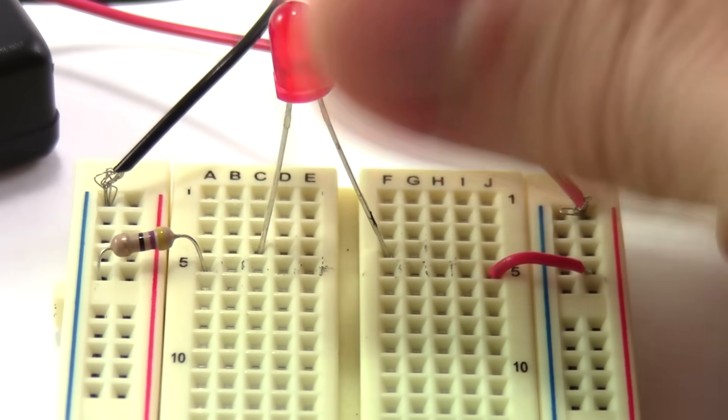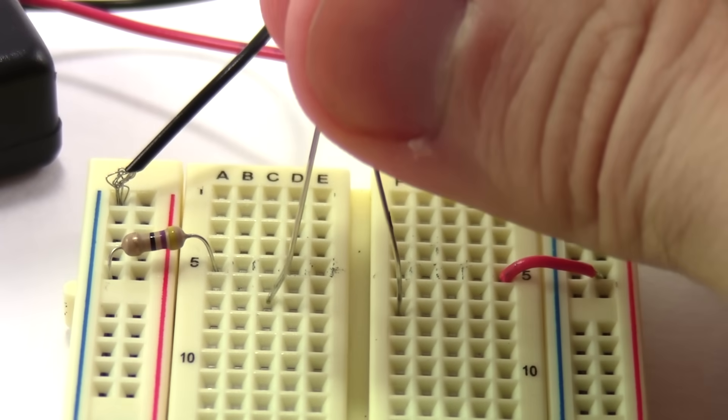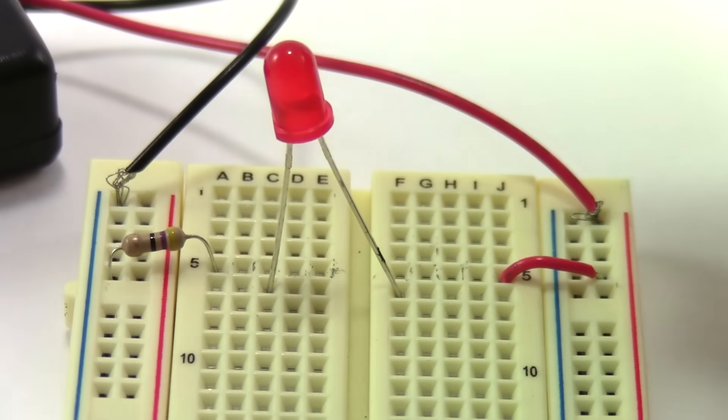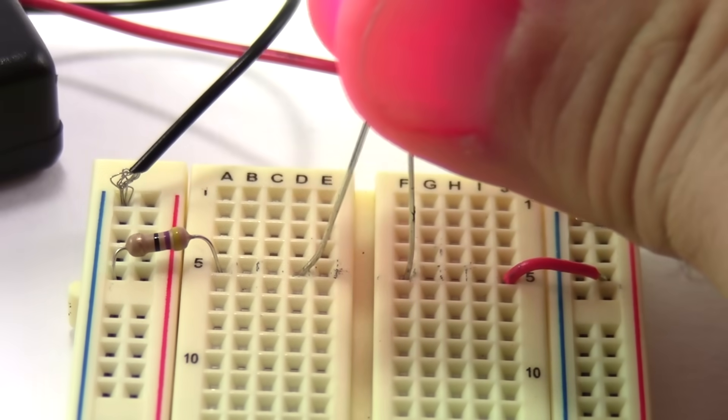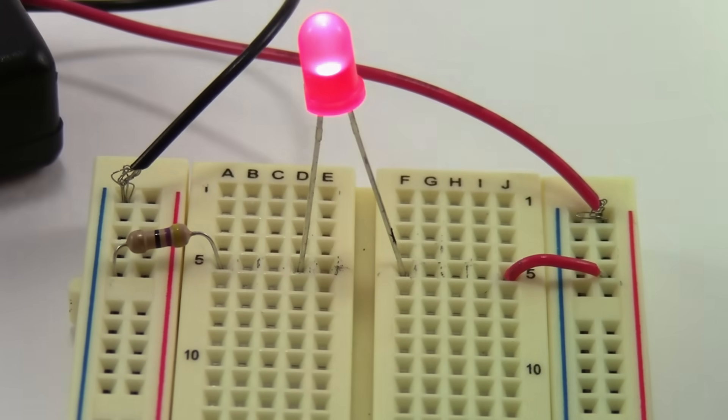However, if I take the LED and move it to a different row entirely, like row four or row six, it does not light up because there is no path for the electricity to flow. It has to be in row five to have that complete path.